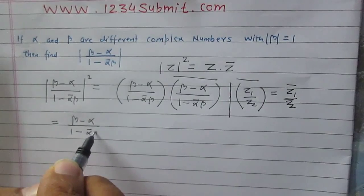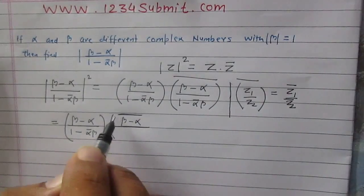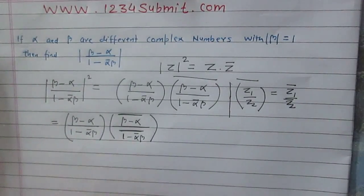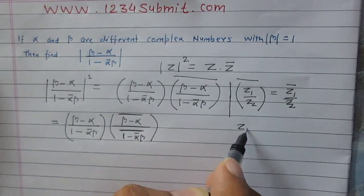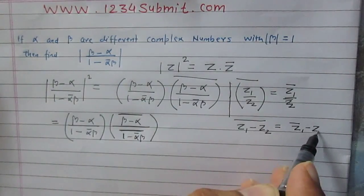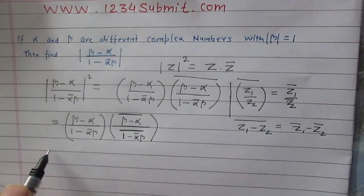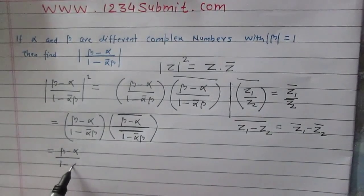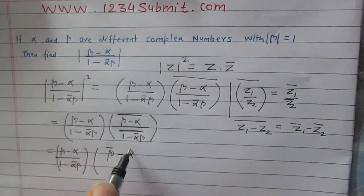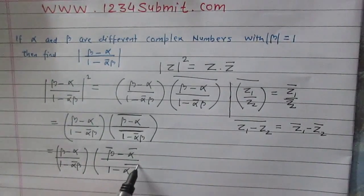We apply the property that the conjugate of the difference of two complex numbers is just the difference of their conjugates. Using this property, the right-hand side will become: (beta minus alpha) / (1 minus alpha conjugate beta) multiplied by (beta conjugate minus alpha conjugate) / (conjugate of 1 minus alpha conjugate beta).